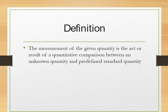Measurement is very important — everything starts from measurement. Again, the definition: the measurement of a given quantity is the act or result of quantitative comparison between unknown quantity and predefined standard quantities. There are different standards and units available, like meter, centimeter, and kilogram. With the help of these standard units we measure unknown quantities. This process is nothing but measurement, though measurement is a vast area we will explore further.